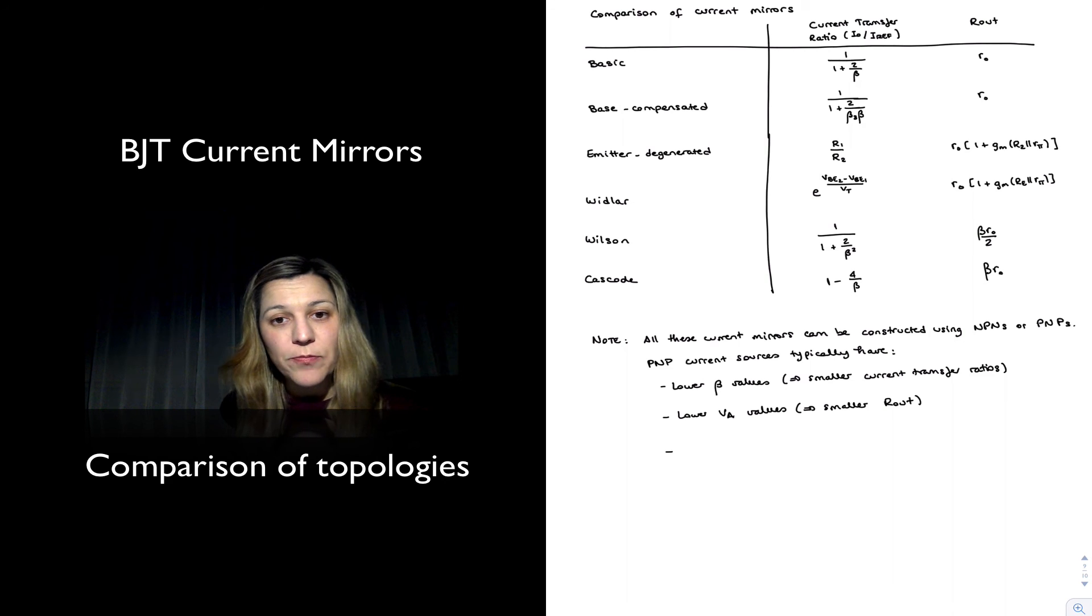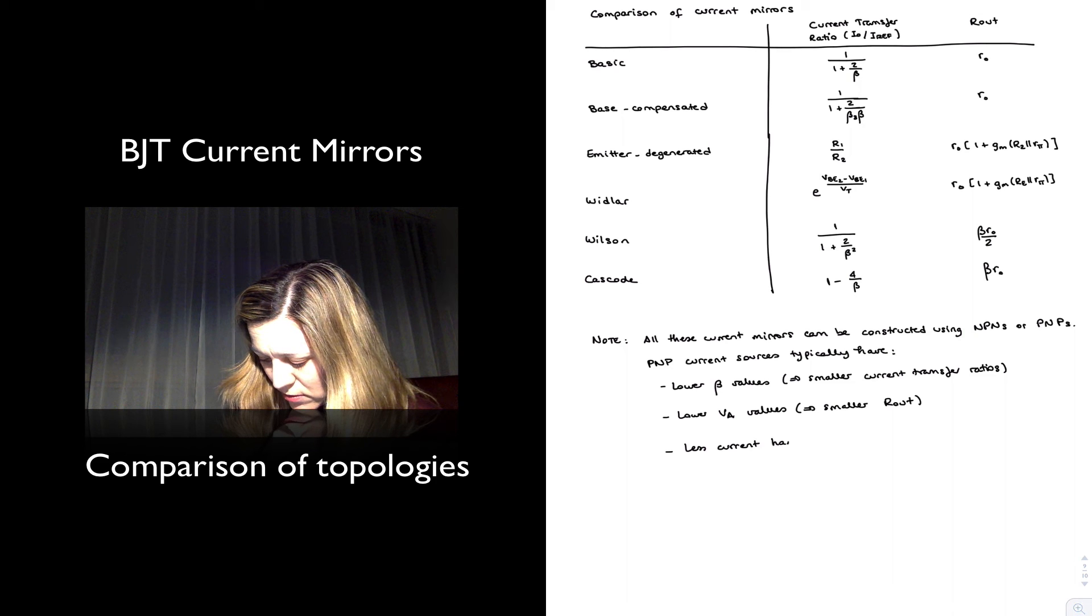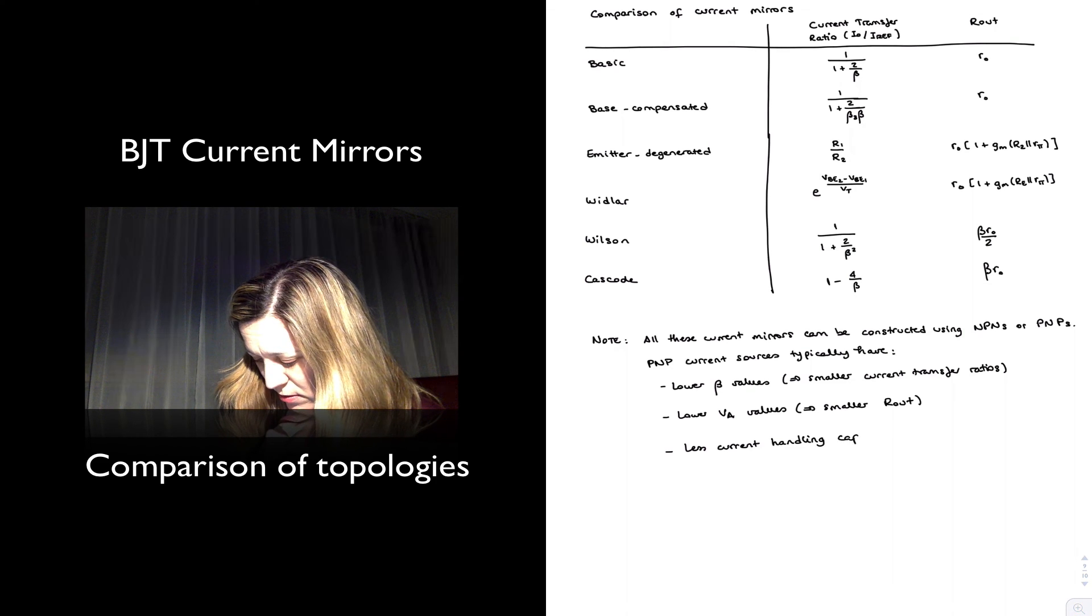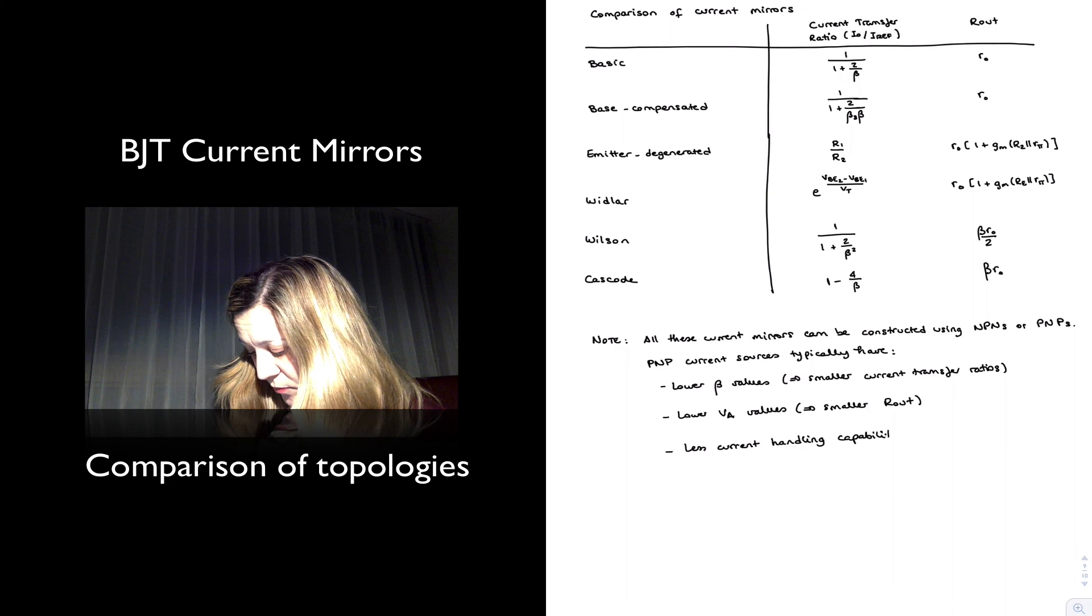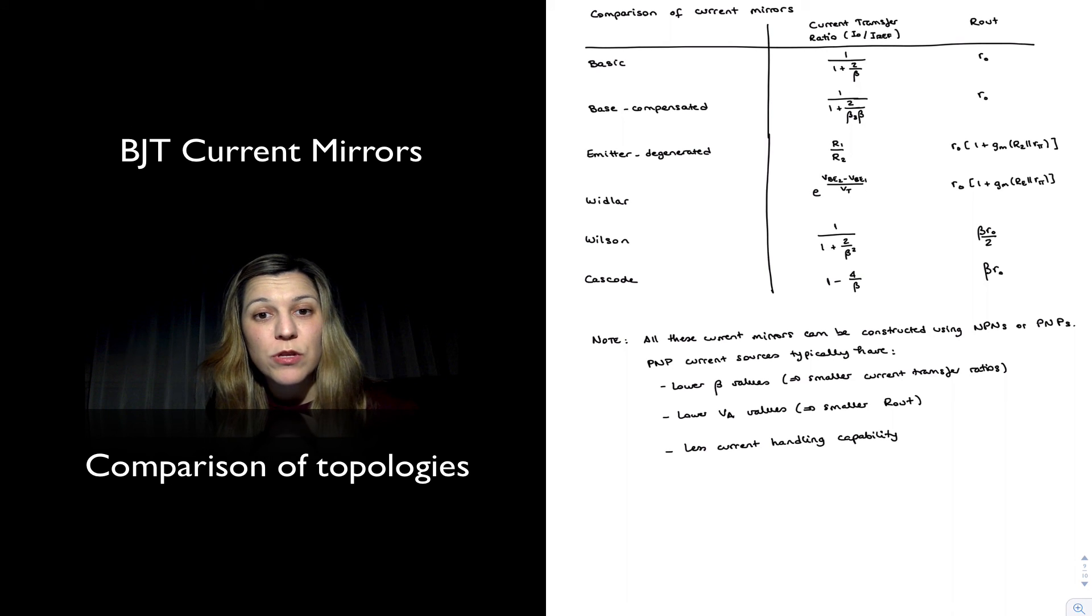And in general, because of the lower mobility of the type of carrier, the holes versus electrons, we will typically have lower current drive capability. But nonetheless, they are used, and in large circuits you will see that both types will be used, PNP sources and NPN sources, and we will see examples of both, both in this chapter, but also once we move on to the differential amplifier. Thank you.